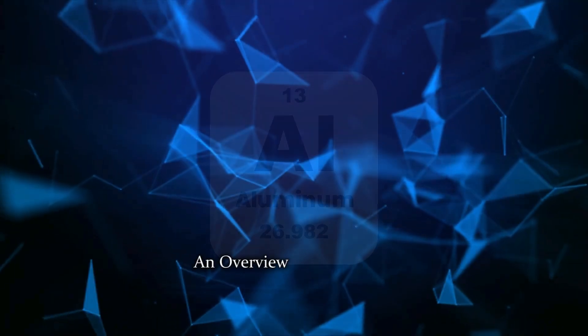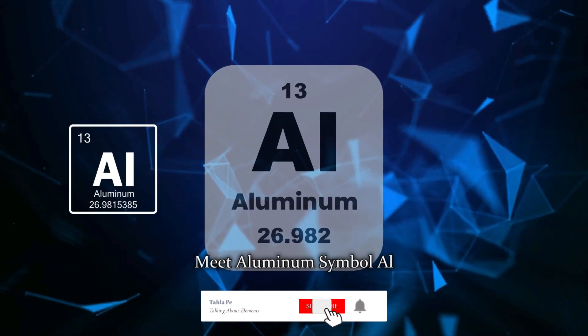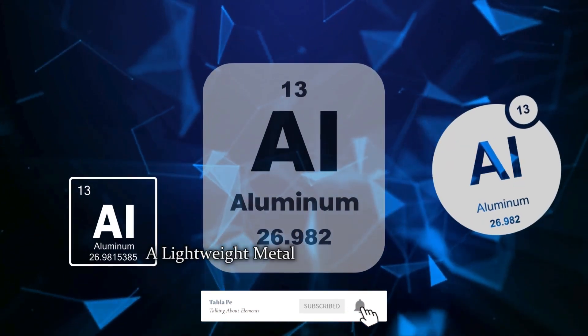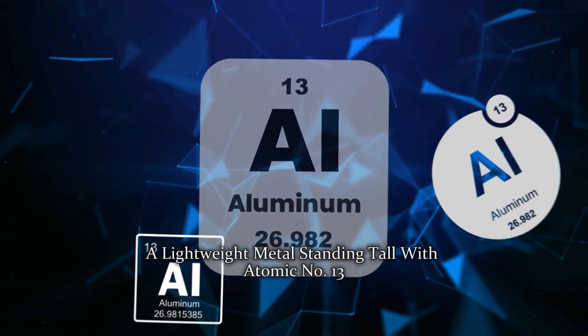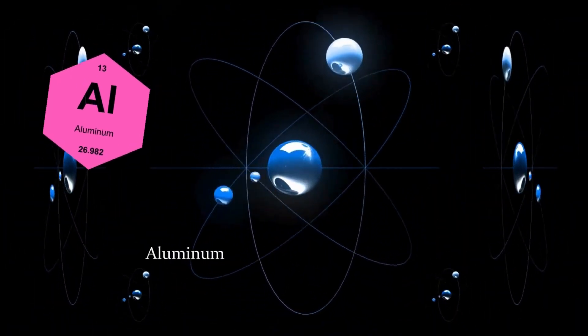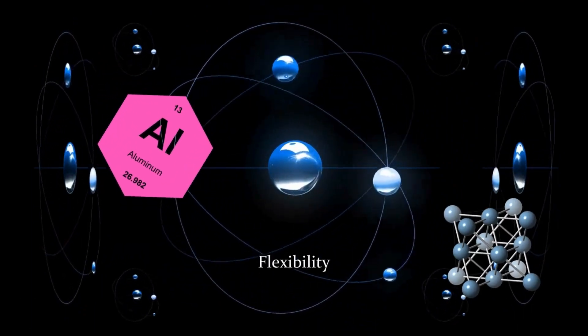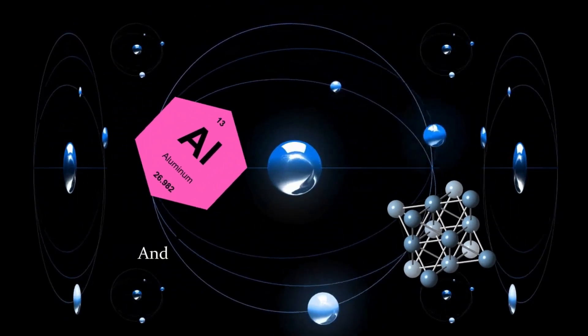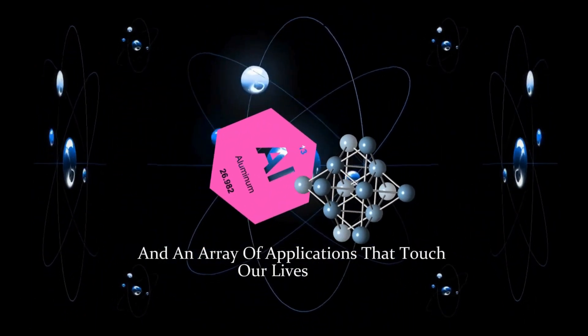An overview of aluminum. Meet aluminum, symbol Al, a lightweight metal standing tall with atomic number 13. In the realm of elements, aluminum commands attention for its strength, flexibility, and an array of applications that touch our lives daily.